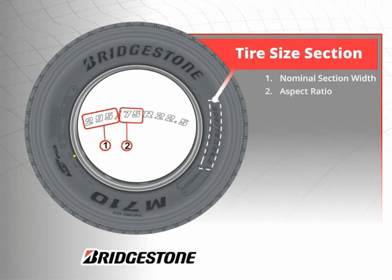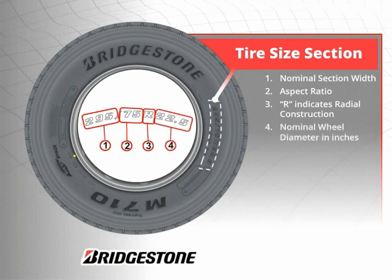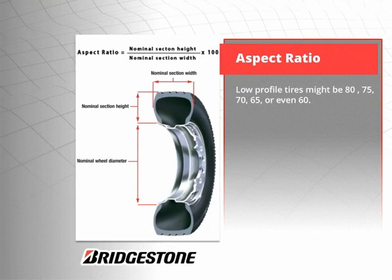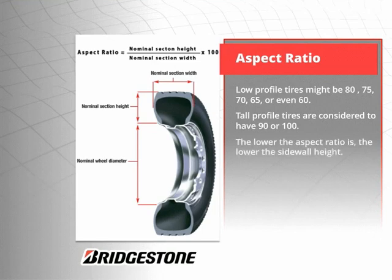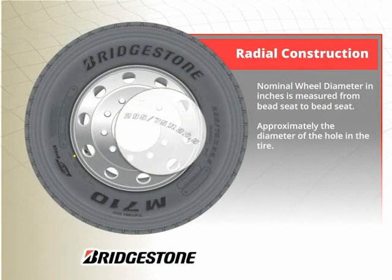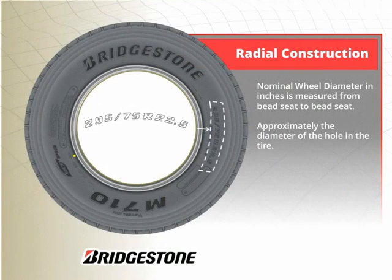Aspect ratio describes the shape of the cross section. R indicates radial construction, and the final number is nominal wheel diameter in inches. Aspect ratio equals nominal section height divided by nominal section width times 100. Typical aspect ratios for low profile tires might be 80, 75, 70, 65, or even 60. Tall profile tires are considered to have an aspect ratio of 90 or 100. The lower the aspect ratio, the lower the sidewall height. Nominal wheel diameter in inches is measured from bead seat to bead seat, which is approximately the diameter of the hole in the tire.